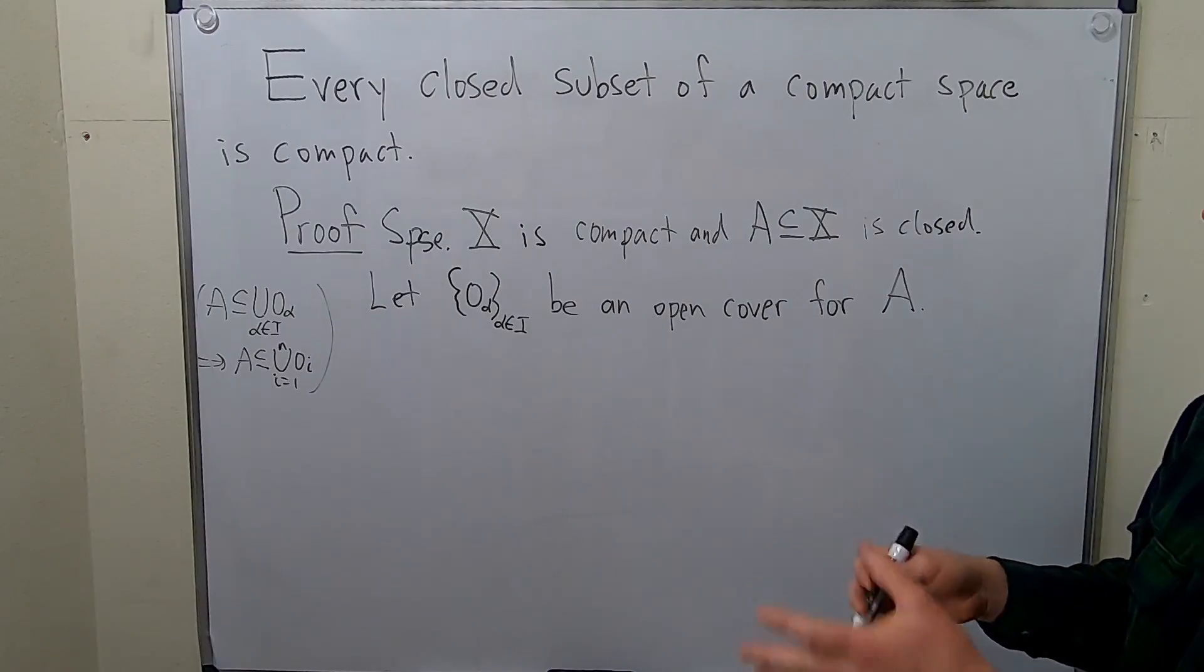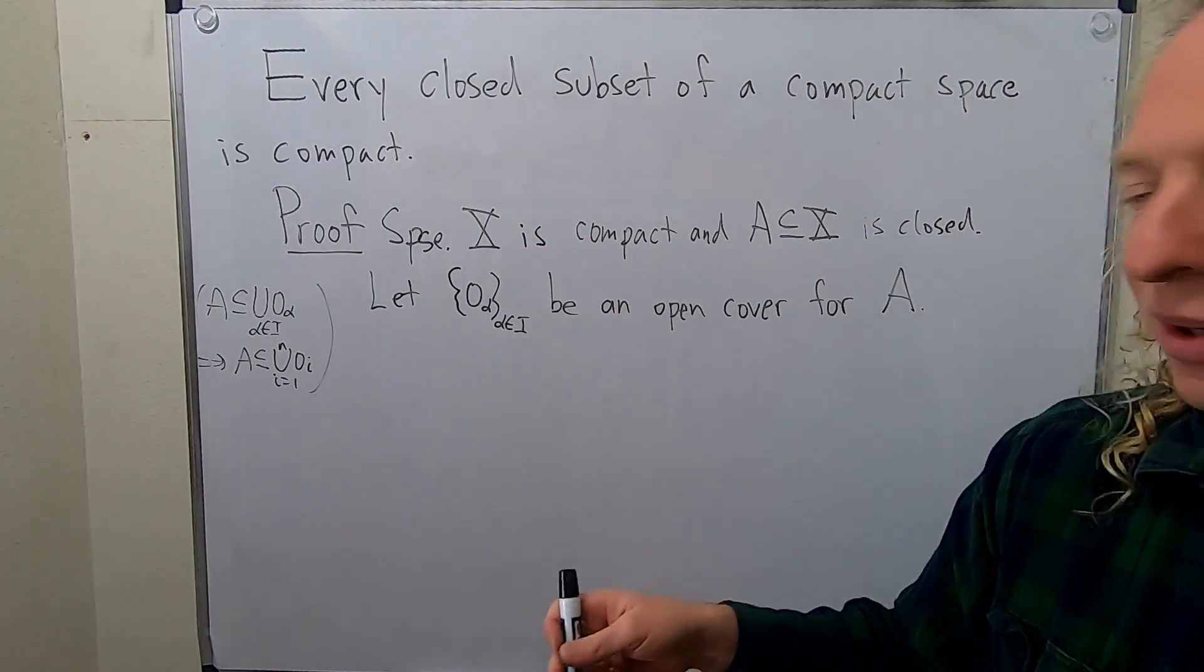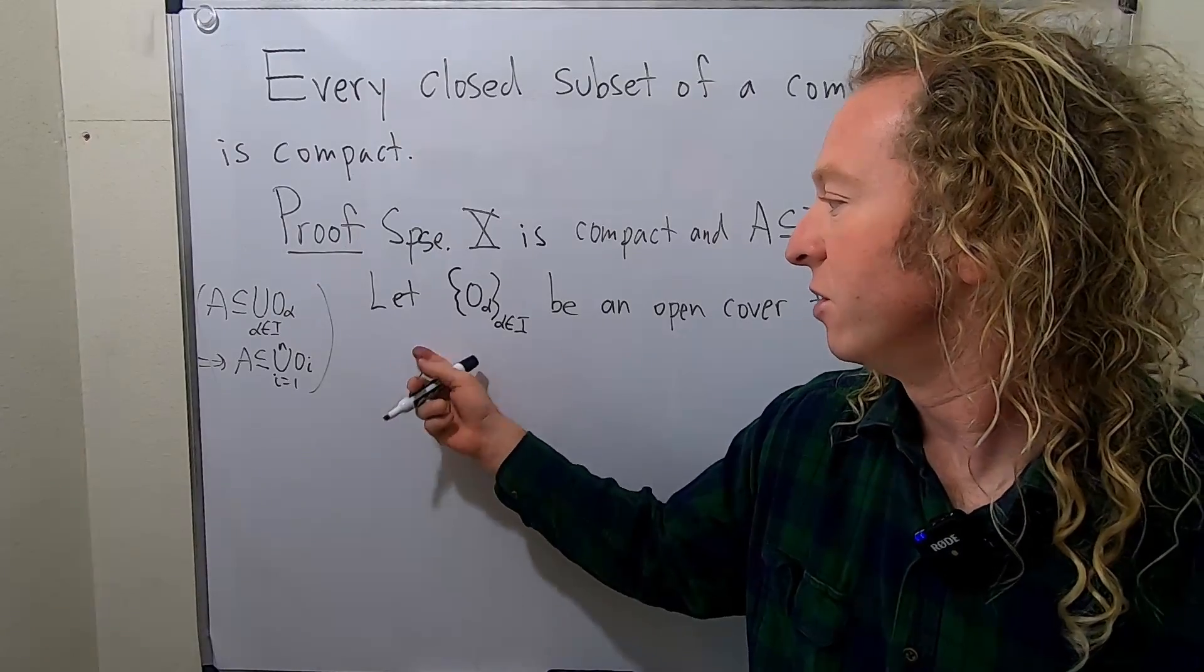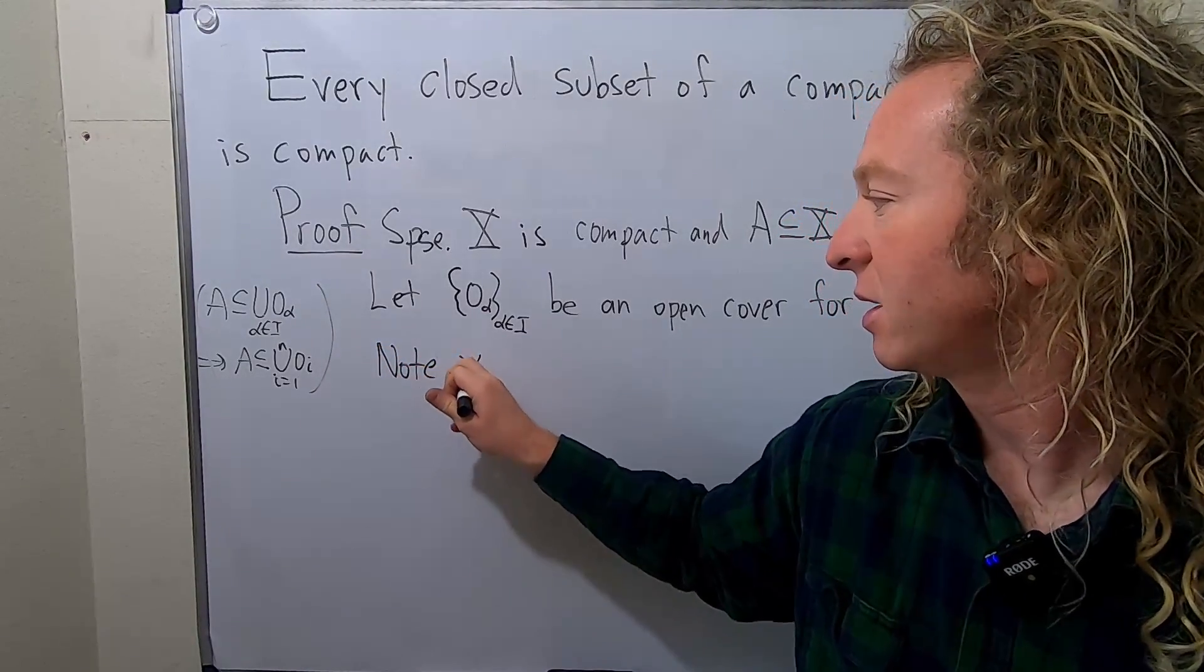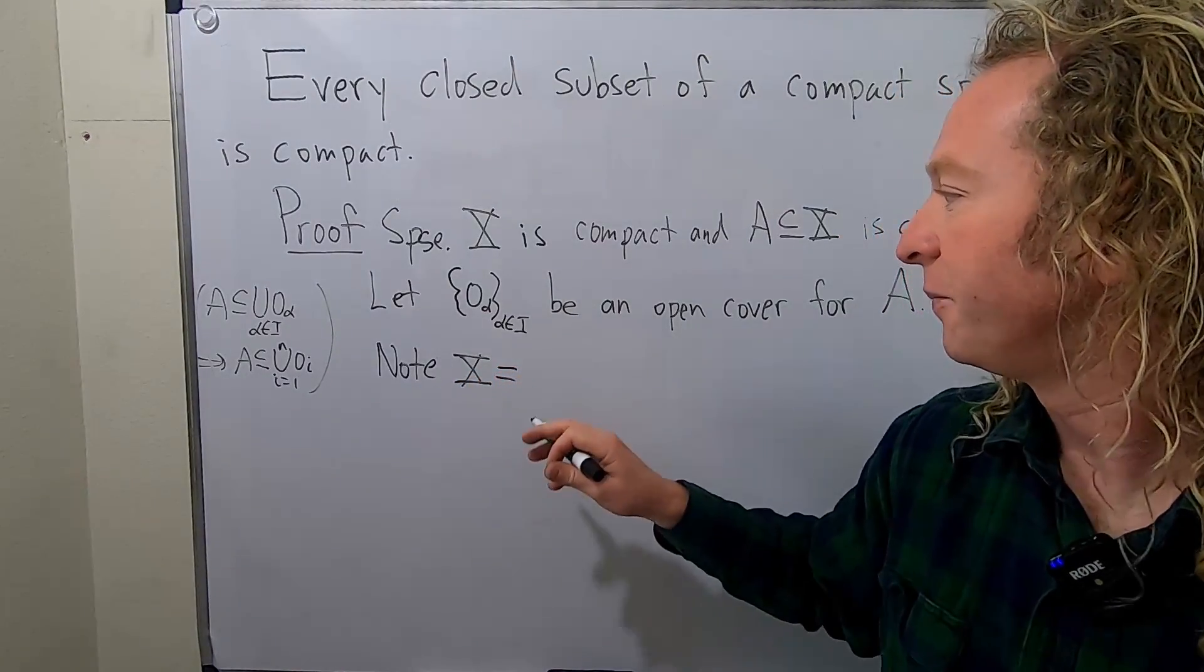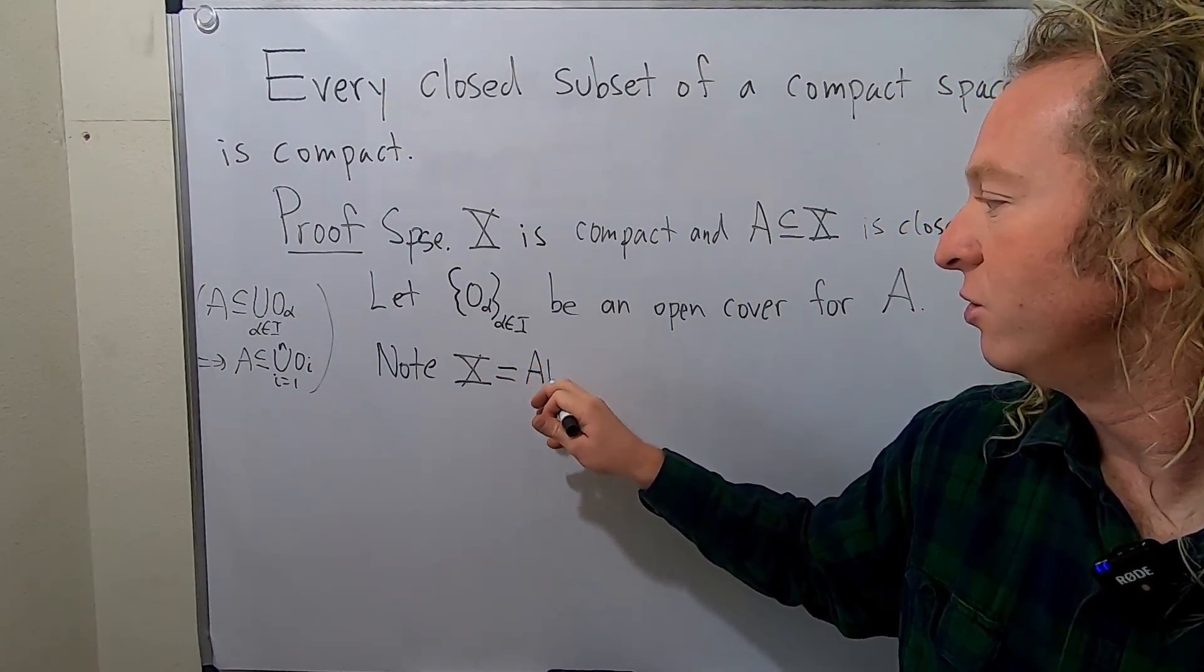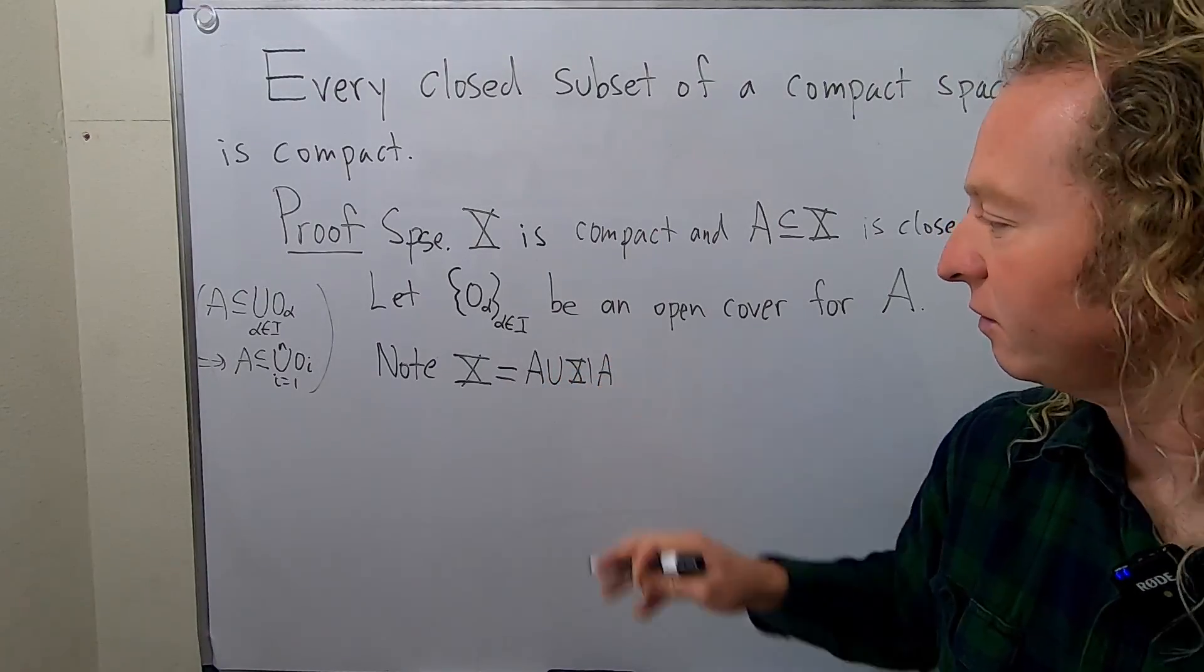So now we need to somehow use the fact that this is closed. So what we're going to do is we're going to write capital X in a really convenient way. Watch this. So note, capital X, this is a reoccurring idea in topology. You can write it as A union X set minus A, right?